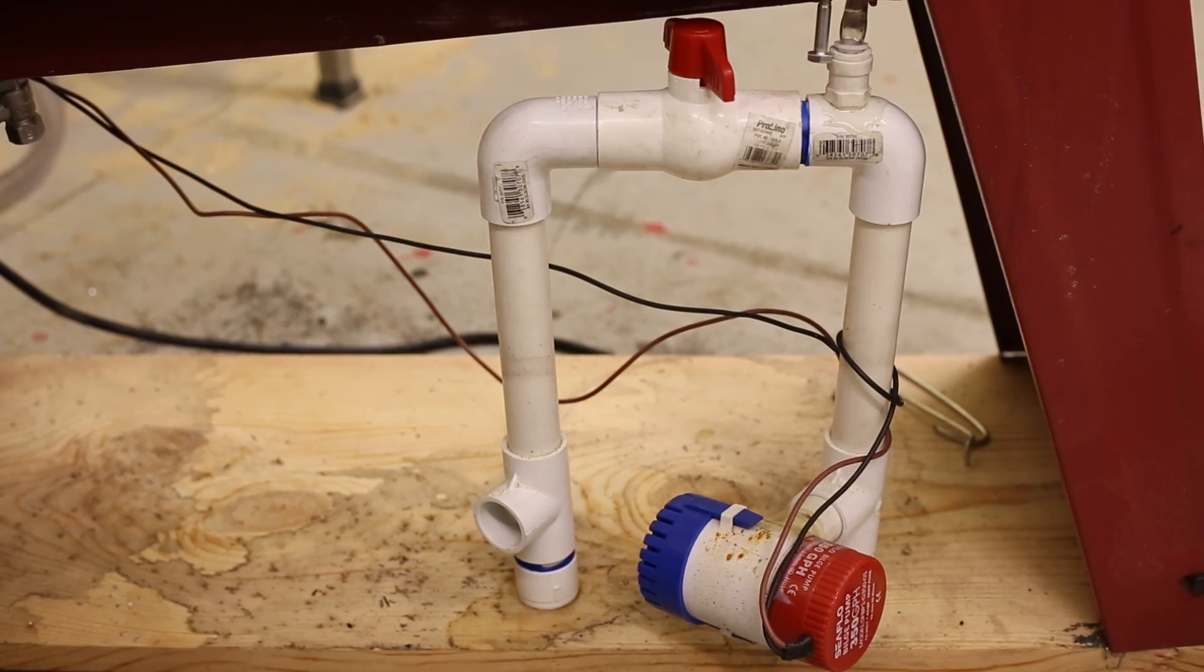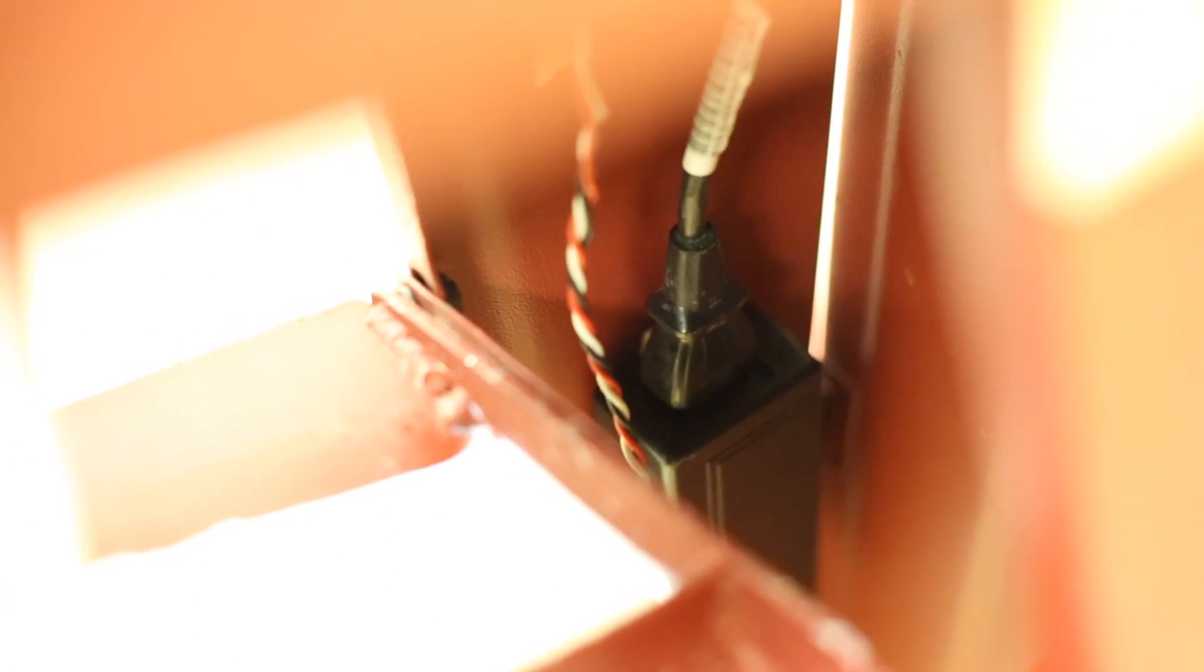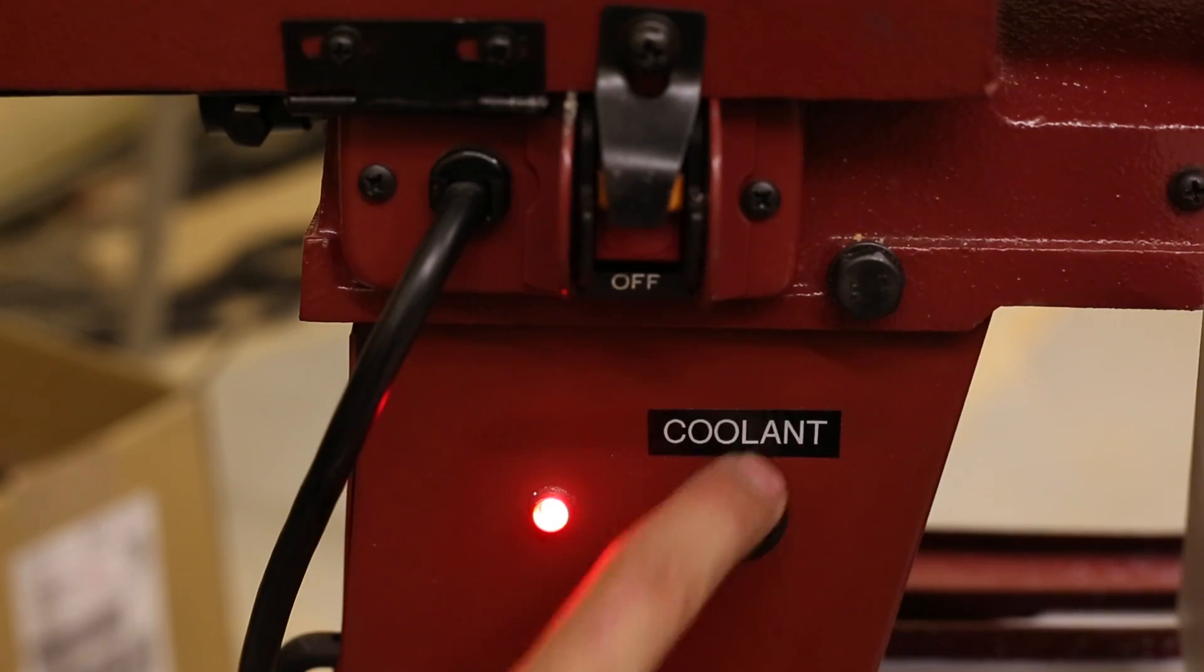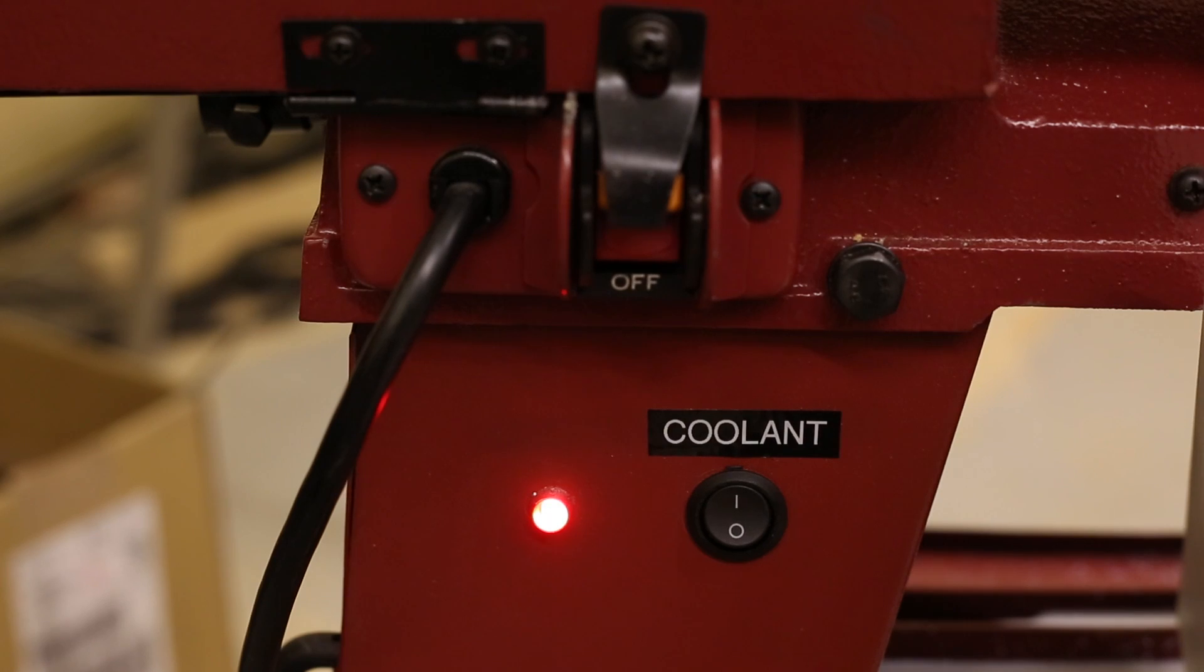The electronics are very simple here. No microcontroller. I have a power supply hooked into the main switch on the bandsaw and a toggle switch hooked to the pump. A bright red light gives a clear indication of the status.